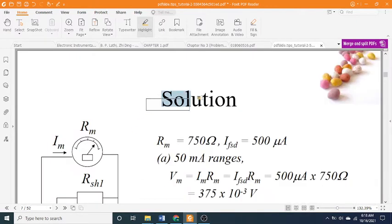Solution: Given values are Rm equals 750 ohms and FSD equals 500 microamps.